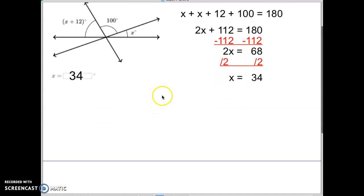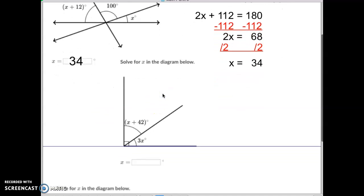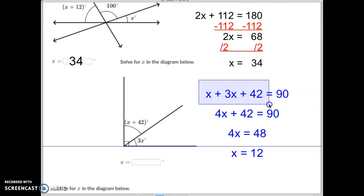Second one. Second problem right here. You'll notice that this is a complementary angle. So this right here and this right here are going to add up to 90 this time. You'll notice I just put the whole thing right there. So we have the x. I already put the two x terms right together there. We have the x plus 42 and the 3x right there all being added together.